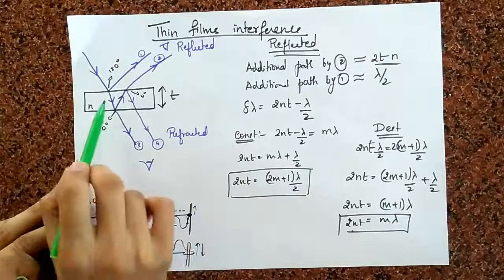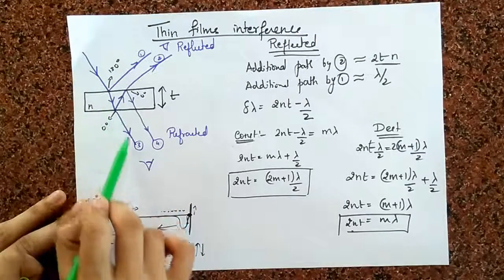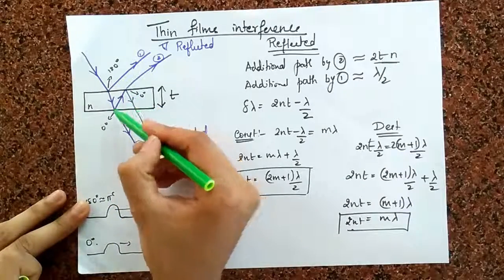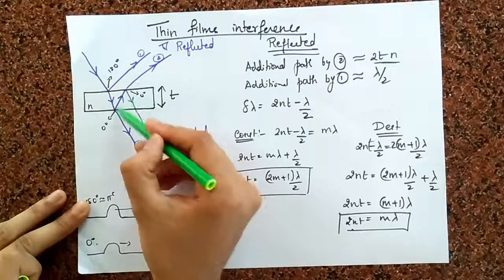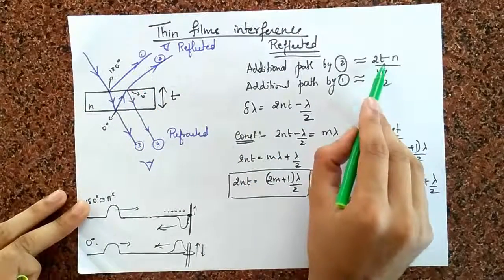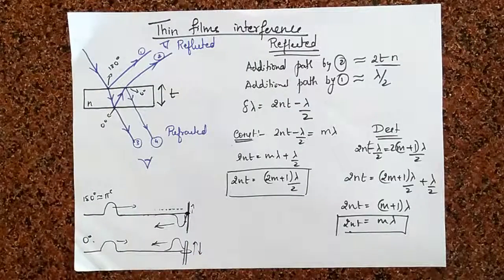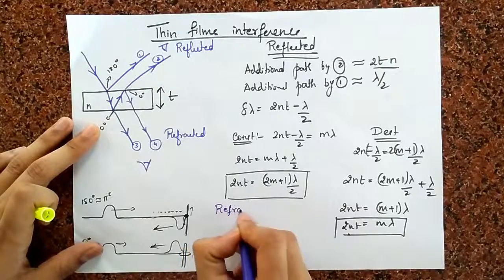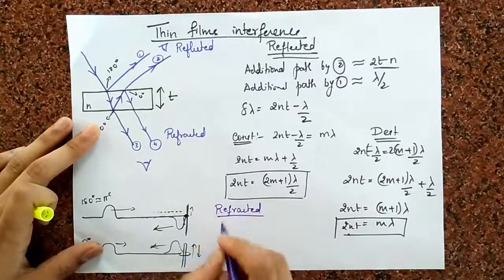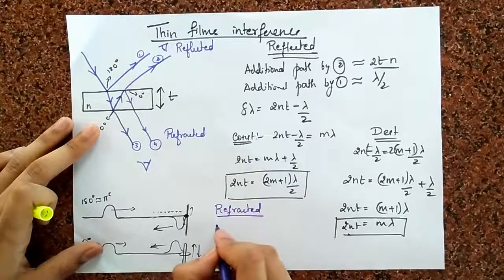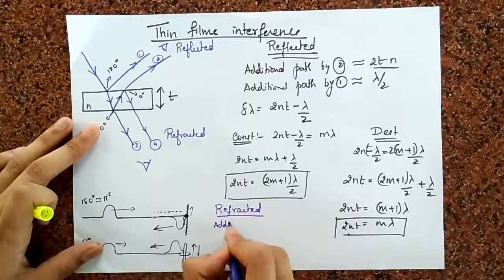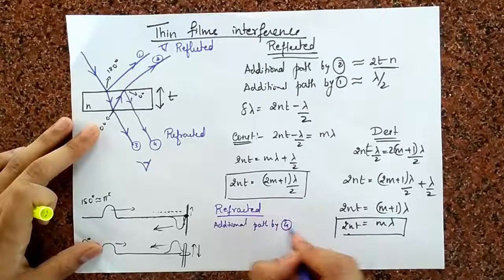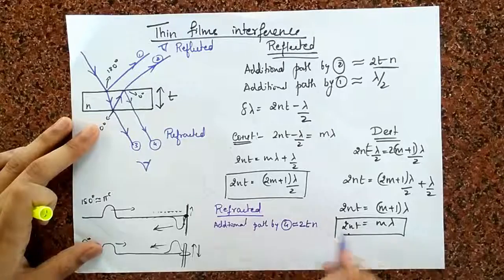You can see that the third ray has travelled this much, and the fourth ray has travelled an additional distance. This additional distance is almost equal to 2 times n e to t. So if we go for refracted case, then we have path difference by 3. Additional path by 4 is going to be almost equal to 2t into n.